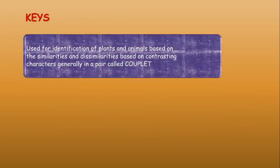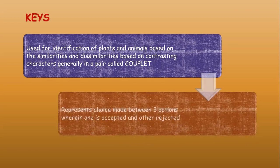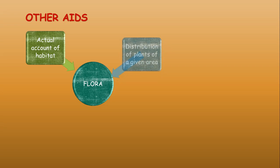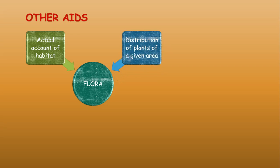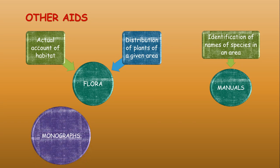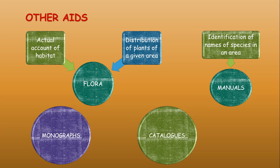Keys are used for identification of plants and animals based on similarities and dissimilarities using contrasting characters generally presented in pairs called couplets. Keys represent a choice between two options, where one is accepted and the other rejected. Other aids include flora, which gives the actual account of the habitat and distribution of plants of a given area; manuals, which help in identifying species names in an area; and monographs and catalogs.